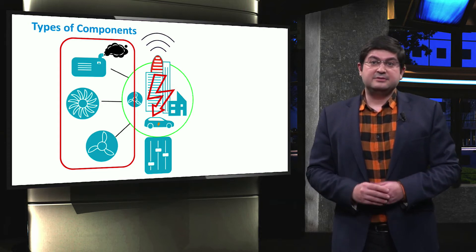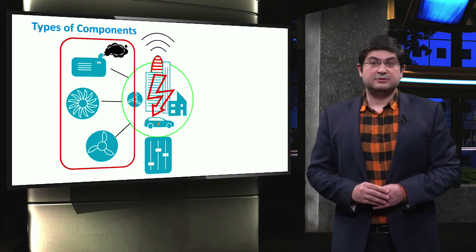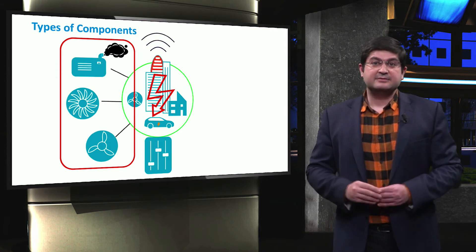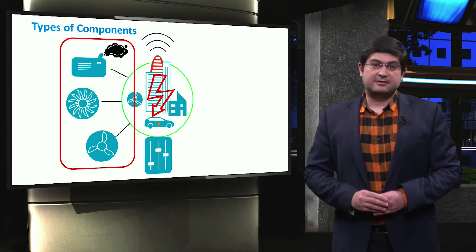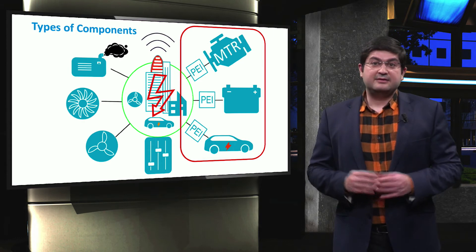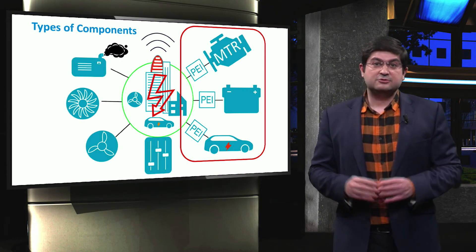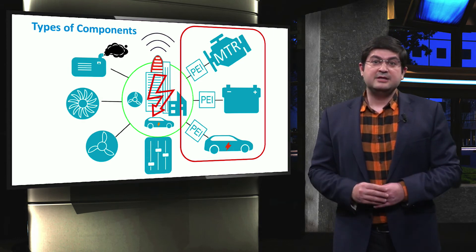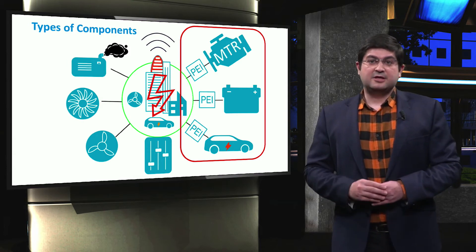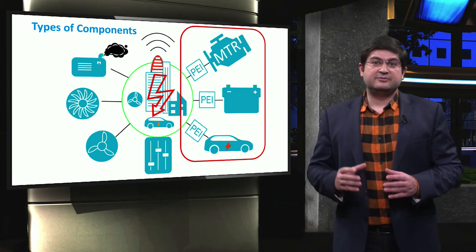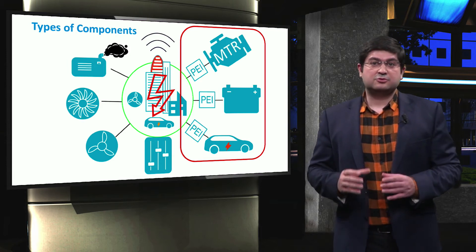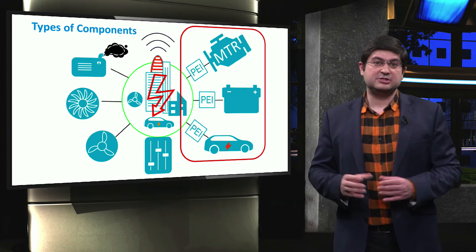On the one hand, due to their direct connection to the microgrid, these types of distributed generators will inject a large amount of short-circuit current. On the other hand, there are other types of electrical components which are connected to the microgrid through power electronic interfaces. These units typically inject a lower amount of short-circuit current due to the presence of highly controlled power electronic switches.